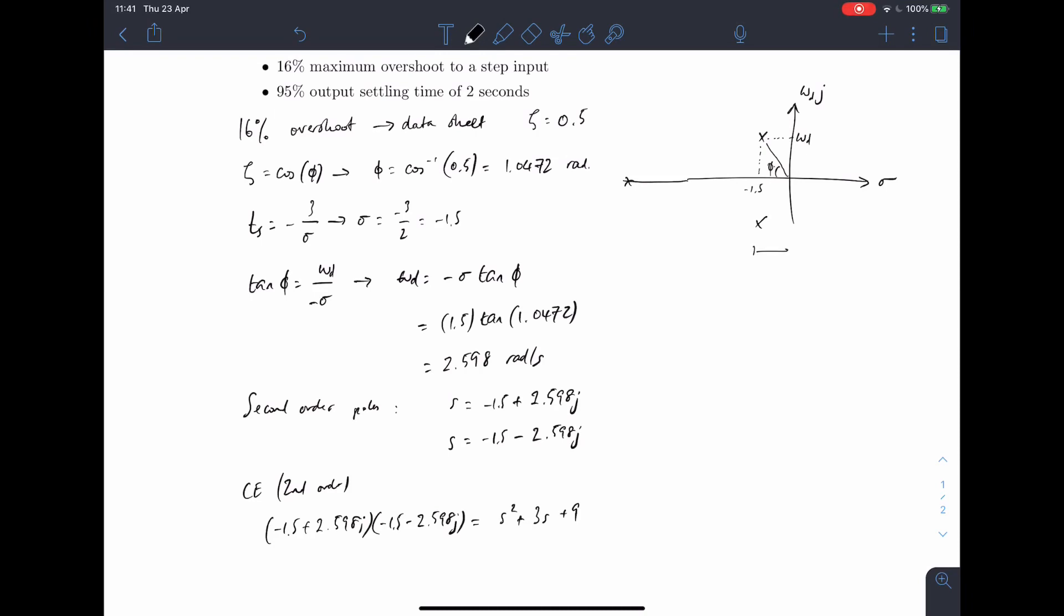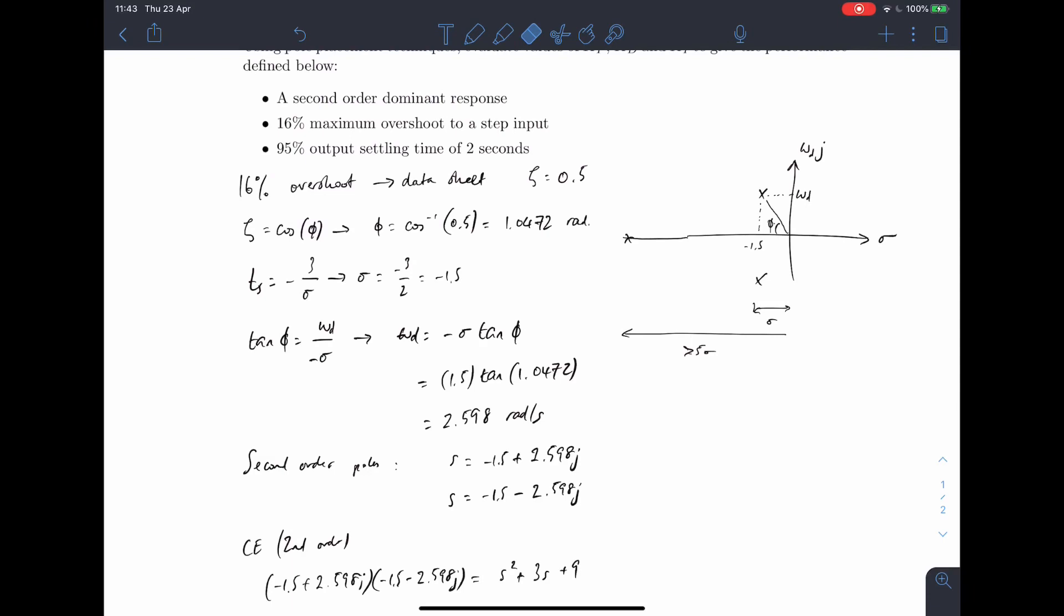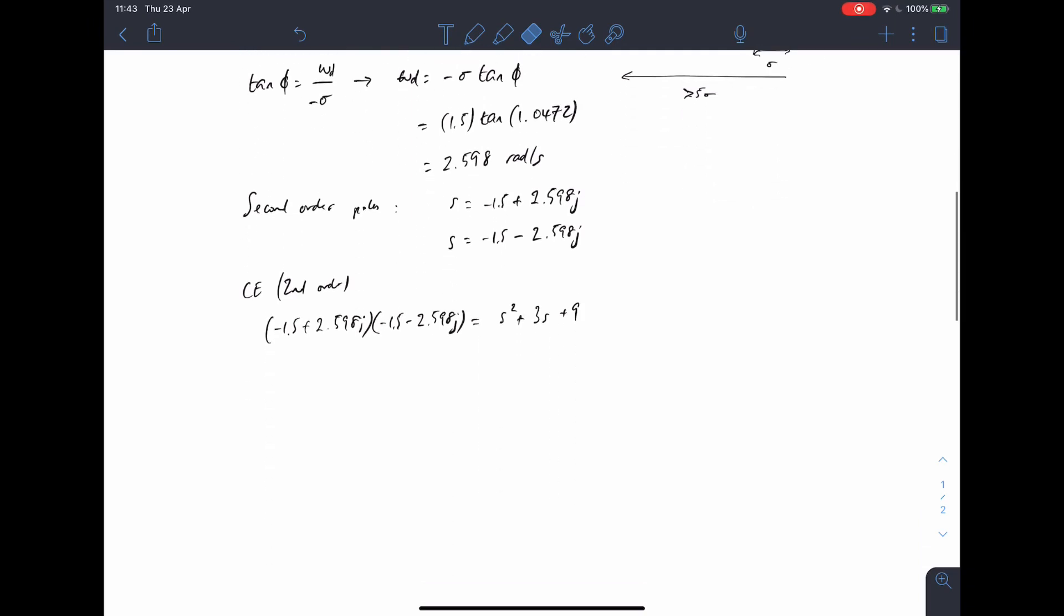As long as this distance here, if I call that distance sigma, this distance here needs to be greater than five sigma. The further to the left those poles are, the quicker they decay. And since we want a second order dominant response, we want that part of the effect of that pole to decay very quickly. And so that's why we place it five times further away. Five times further away, we mean that third pole, we'd have S equals minus 7.5.